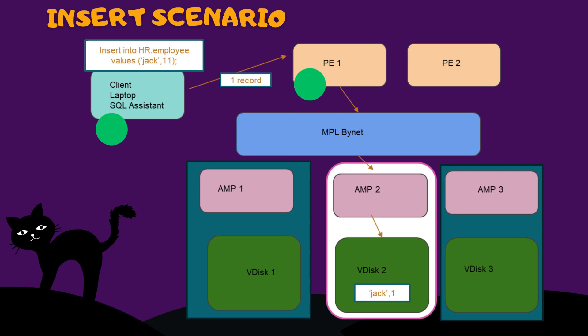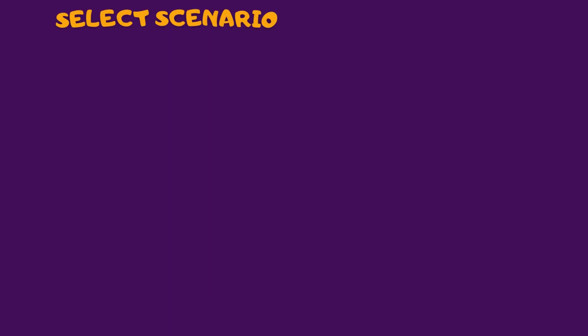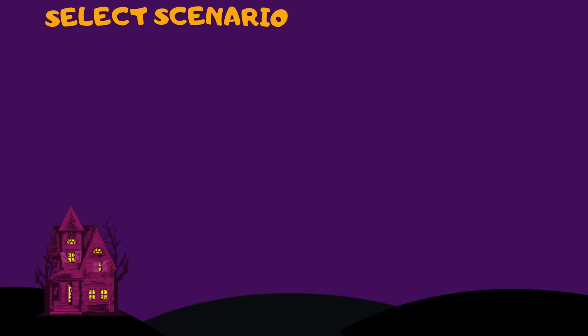It validates whether my ID has INSERT access on the HR database and Employee table. Next, the Optimizer prepares a plan and the Dispatcher passes this plan to the Message Passing Layer. This Message Passing Layer communicates between the Parsing Engine and AMPs. Finally, the records get assigned to an AMP using the hashing algorithm, which places the record into a virtual disk under that specific AMP.